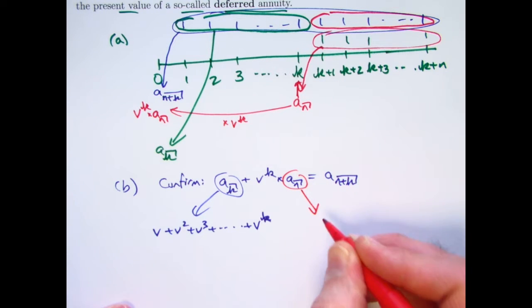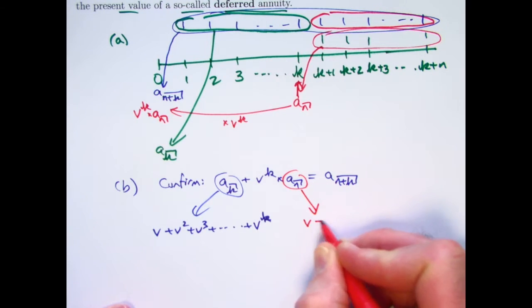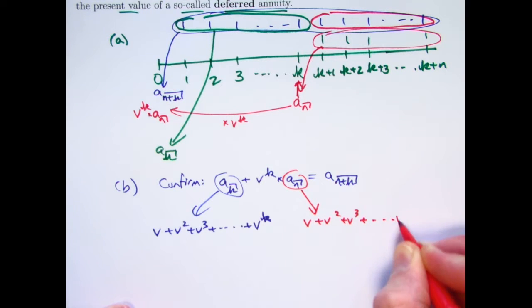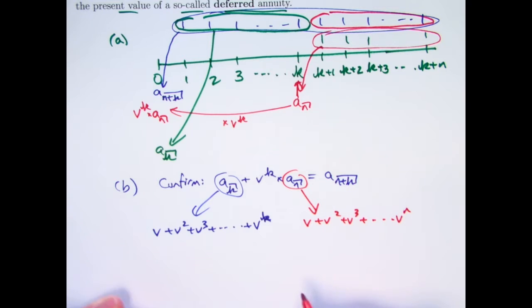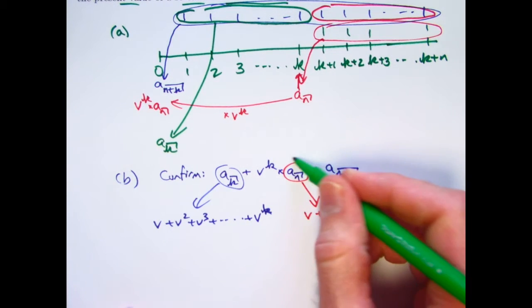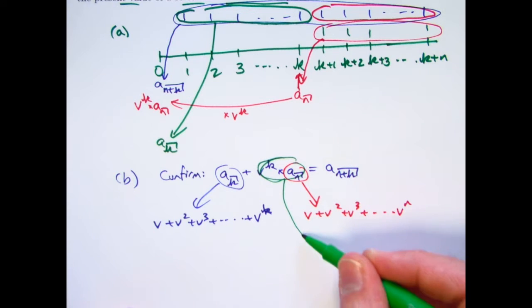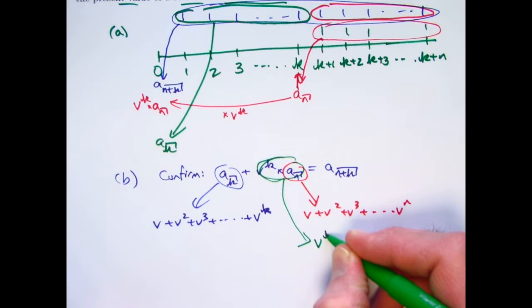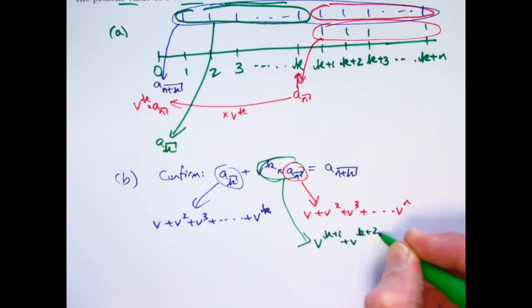This expression right here in an analogous way represents V plus V squared plus V cubed plus all the way to V to the N. There are N payments now. If I multiply that by V to the K, multiply all these by V to the K, I add the exponents. I'm going to get V to the K plus one plus V to the K plus two plus V to the K plus three, et cetera. The last one is going to be V to the K plus N.